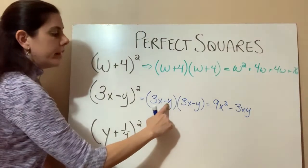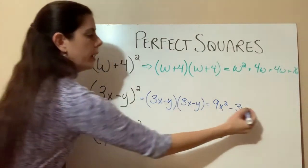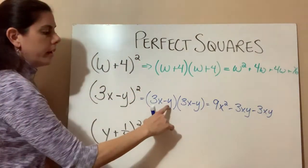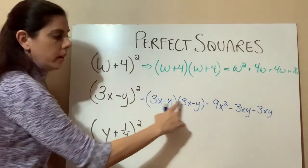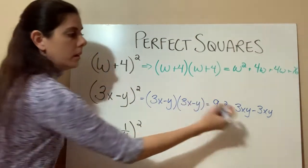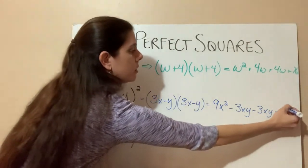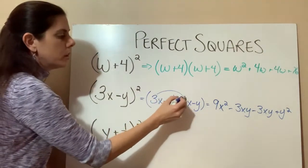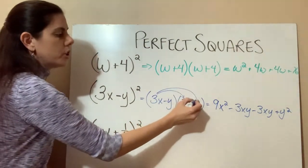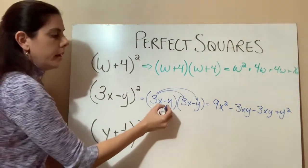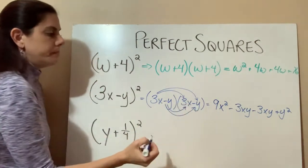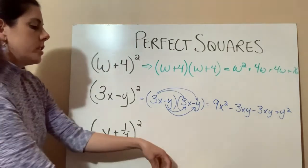And then again, we'll have a negative y times a 3x, which again will be a negative 3xy. And then negative y times negative y equals a positive y squared. So again, we're just taking this first term and distributing it to each term in the second set, then taking the second term and doing the same thing.